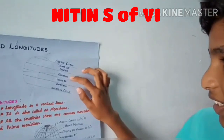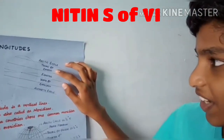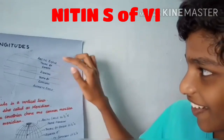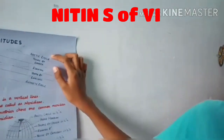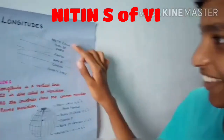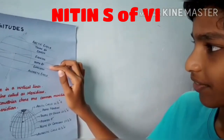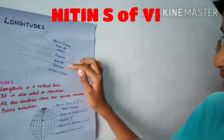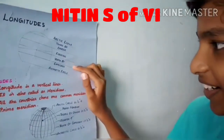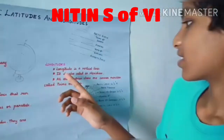The important latitude is the equator. Above the equator is the Tropic of Cancer. Above the Tropic of Cancer is the Arctic Circle. Below the equator is the Tropic of Capricorn. Below the Tropic of Capricorn is the Antarctic Circle.